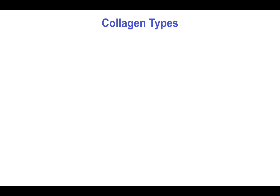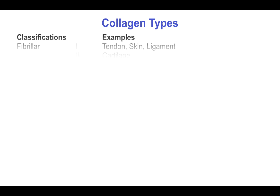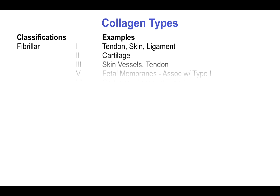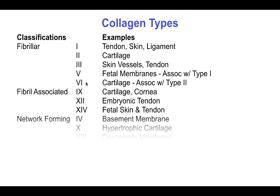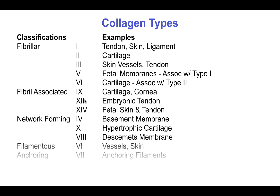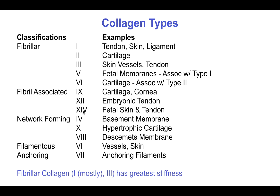The alpha chains of collagen are coded by different genes, and most collagens consist of two or three different alpha chains. This gives rise to more than 20 different collagen types. The fibrillar collagens are the most common — they are types 1, 2, 3, 5, and 6. Types 9, 12, and 14 are fibril-associated collagens. Types 4, 10, and 8 are the network-forming collagens. Type 6 is the filamentous collagen, and type 7 is an anchoring filament collagen.